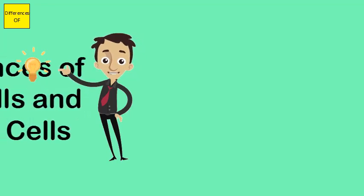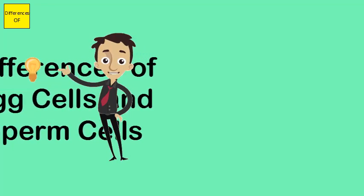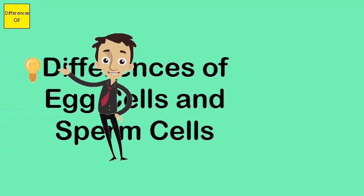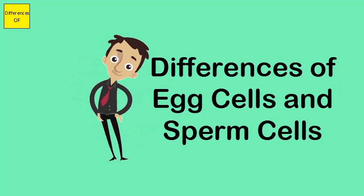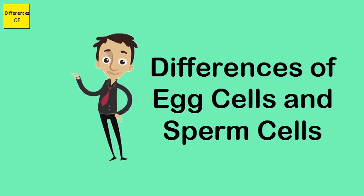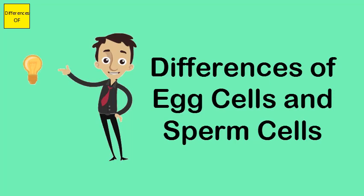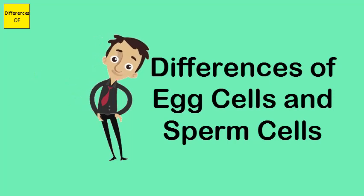Difference between egg cells and sperm cells. Egg cells are considered to be the largest cells in the human anatomy, while sperm cells are the smallest cells in the human anatomy.